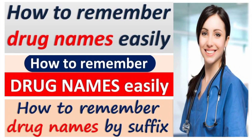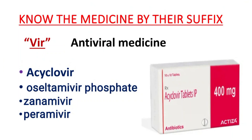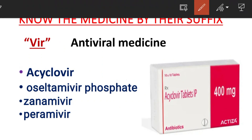Drugs and their names are easily known by suffix. Maximum antiviral medicines can be identified by suffix. Examples include Acyclovir, Oseltamivir, Zanamivir, and Peramivir. Those are the antiviral medicines, and they are easily known by their suffix.